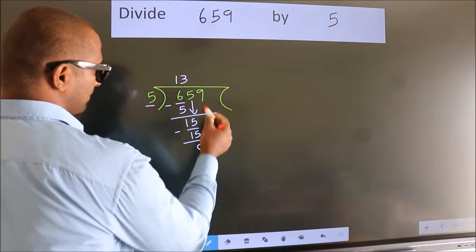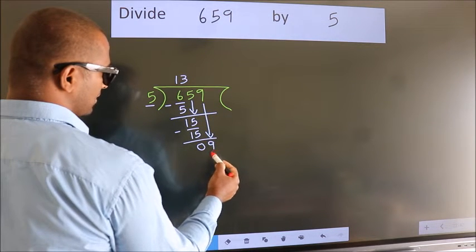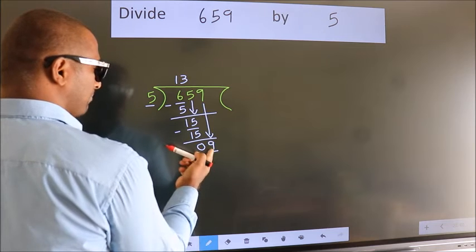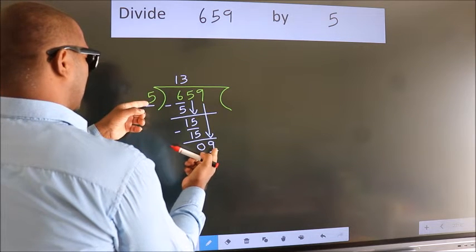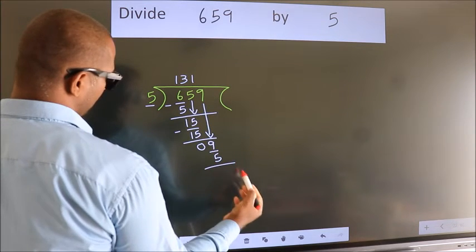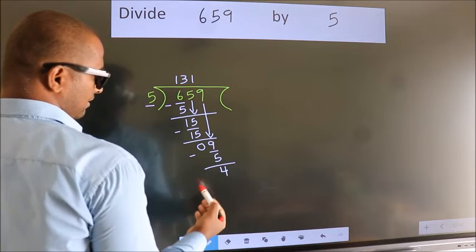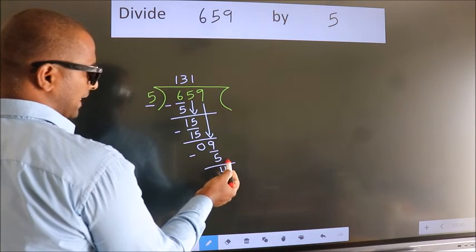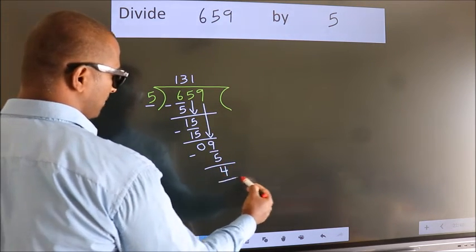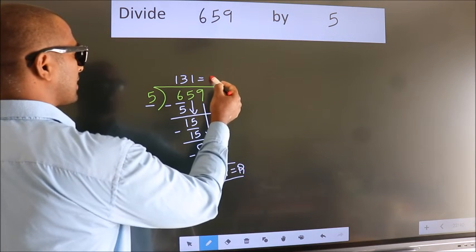After this, bring down the beside number. So 9 down. So 9. A number close to 9 in 5 table is 5 once 5. Now we subtract. We get 4. No more numbers to bring it down. So we stop here. This is our remainder. This is our quotient.